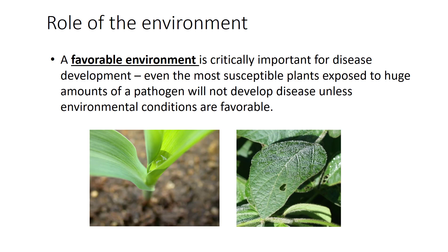A favorable environment is needed for plant disease to develop. For example, soybean and the white mold fungus must interact in cool, moist conditions during flowering in order for disease to occur. A favorable environment is critically important for disease development. Even the most susceptible plants exposed to huge amounts of a pathogen will not develop disease unless environmental conditions are favorable.